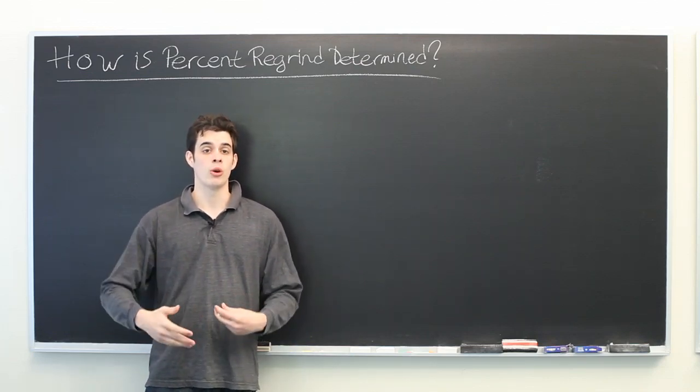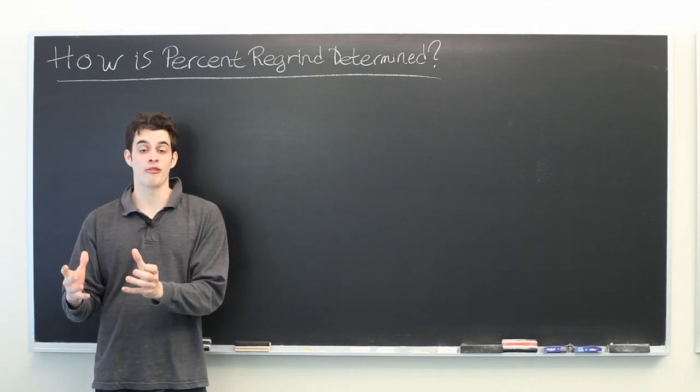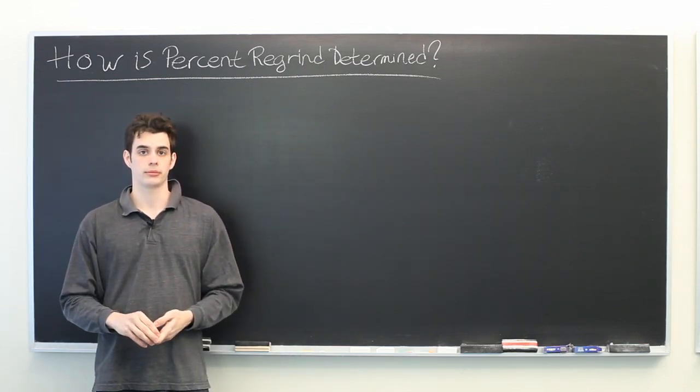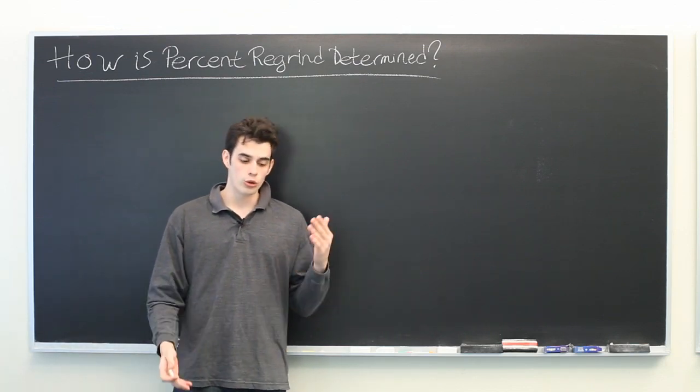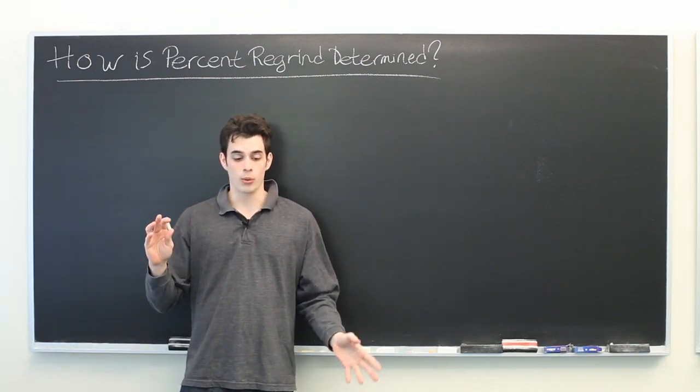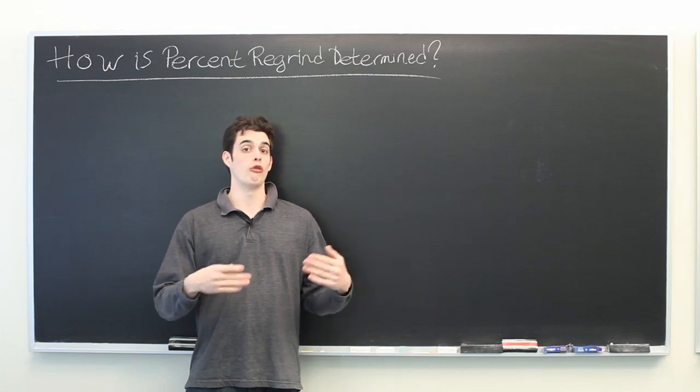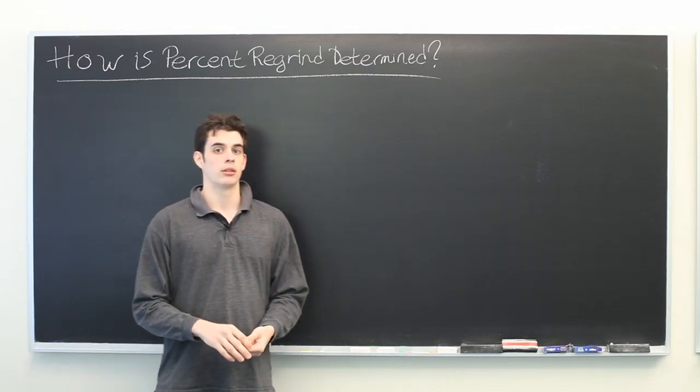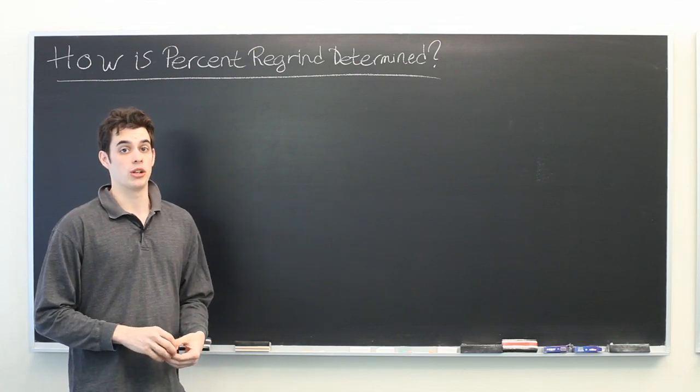Percent regrind refers to how much of a given unit of plastic is comprised of regrind plastic. Now there are two basic ideas of how one can do this. One is to use volume and the other is to use weight. Typically, percent regrind is calculated using weight.